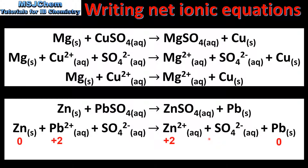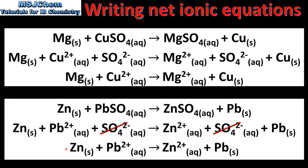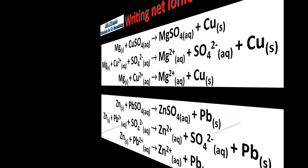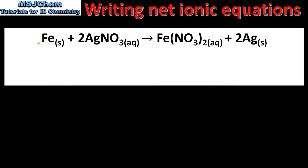Once again, if we look at the oxidation states we can see that the zinc has been oxidized and the lead 2+ ions have been reduced. The sulfate ion does not undergo oxidation or reduction, so it is the spectator ion. And here we have the net ionic equation for the reaction.